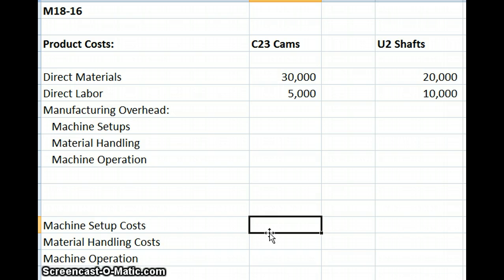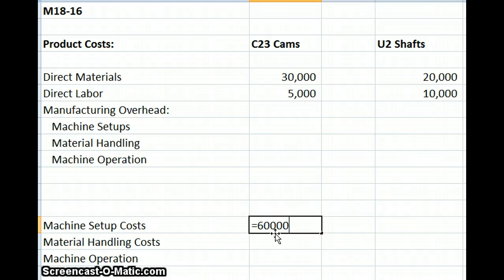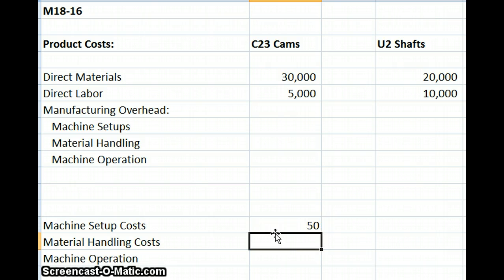Our problem gives us three activity cost pools. The first is machine setup. Our machine setup costs have a total estimated cost of $600,000, divided by our estimated 12,000 setup hours. So we apply machine setup costs at $50 per machine setup hour.